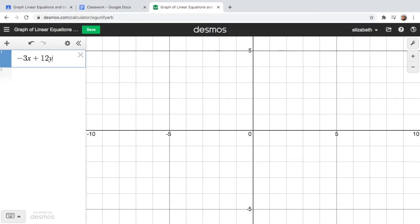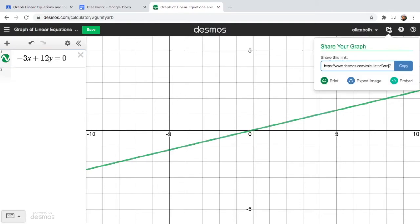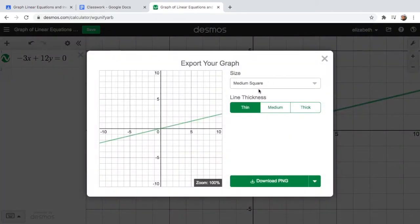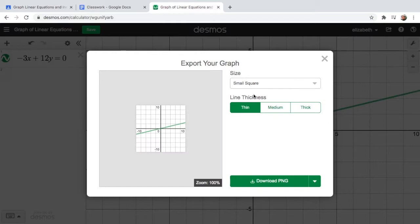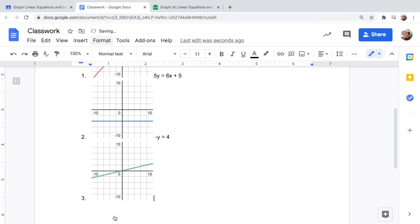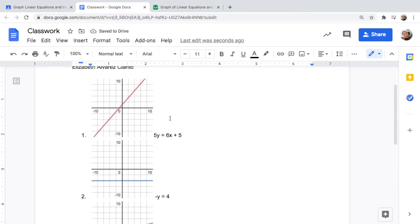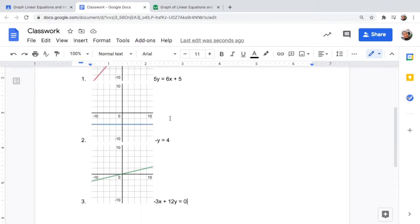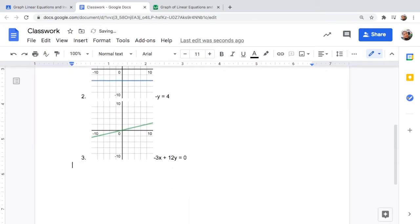And click the arrow, export the image, make it small, and drag it. And you have the graph of -3x + 12y = 0.